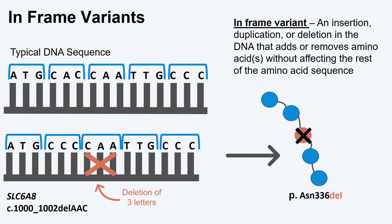As mentioned earlier in this video, DNA letters are read in groups of three to create amino acids. When a multiple of three letters are inserted, duplicated, or deleted in a DNA sequence within the reading frame, this will simply add or remove amino acids without changing the rest of the amino acid sequence. This type of variant is called an in-frame variant. It is called in-frame because it inserts or deletes one or more amino acids and does not shift the reading frame.